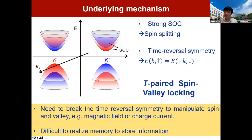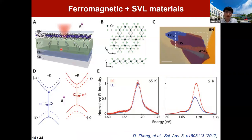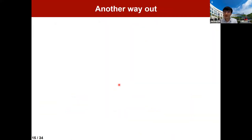The physics summary is simple: two ingredients — strong spin-orbit coupling inducing spin splitting for different k-points, and time-reversal symmetry ensuring K and K' have opposite spin. This is T-plus spin-valley locking. However, there are disadvantages: to access the valley or spin degree of freedom, you have to break time-reversal symmetry using magnetic field or charge current. More importantly, we can use this material to process information but cannot save information — we cannot realize memory based on this material, unlike ferroelectric or ferromagnetic materials. A famous paper by Geim proposed stacking different 2D materials, and experiments realized combining ferromagnetic material with TMD for information storage and processing.